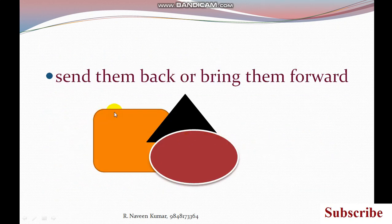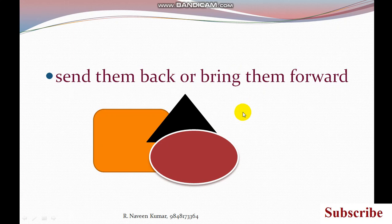See — this square is upon the triangle. The circle is on the front side, the triangle is on the back side, and the rectangle is in back. How to send this triangle back and how to bring it forward — this is the sending and bringing forward concept. I will explain in Word.